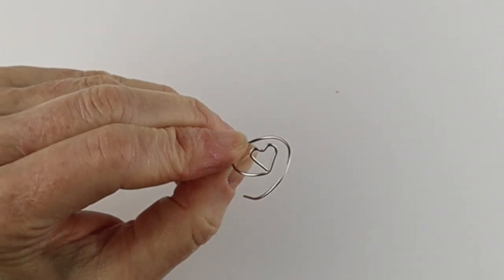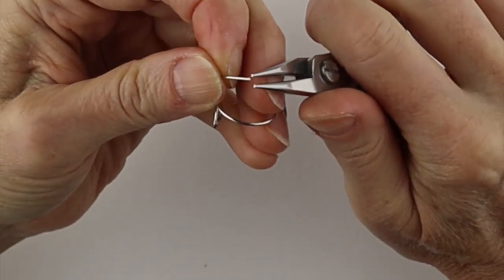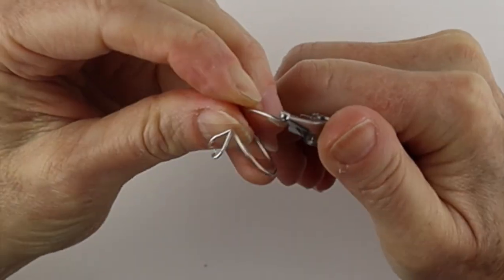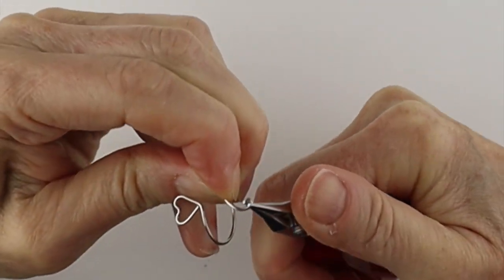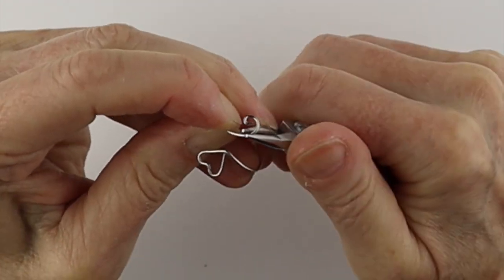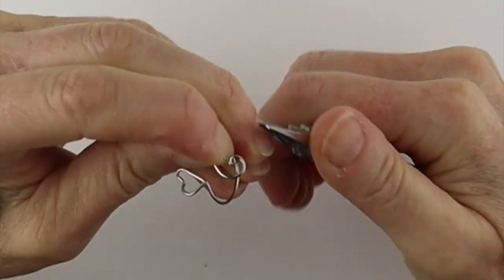And you can clip that if you want, or you can turn it into a little spiral. So we'll take our round pliers, bring this one around and just slowly twist it around.